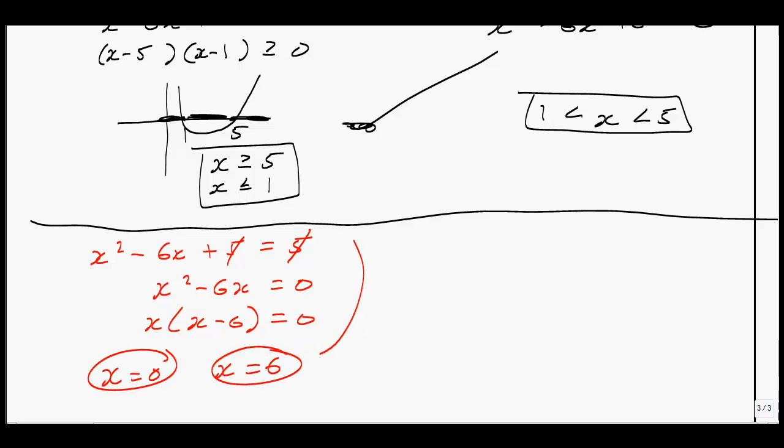Now, what I will do is I will check these again against my restriction. x equals 0. Well, notice how that falls in this region right here. So that means this one is good. x equals 6 falls in this region up here. That means that is also a good solution.